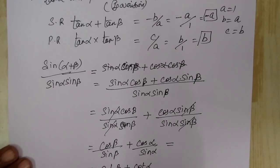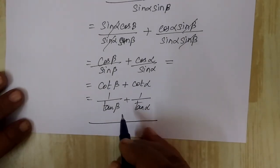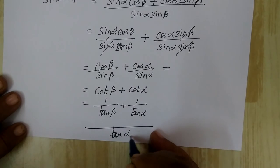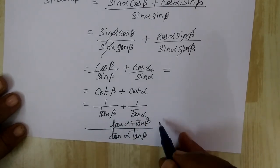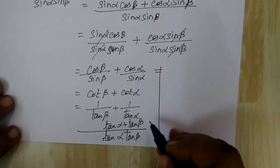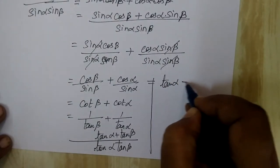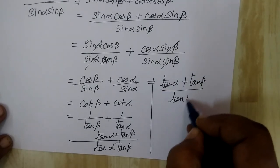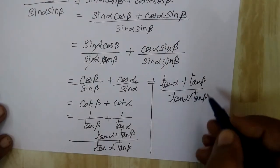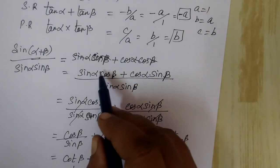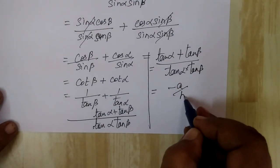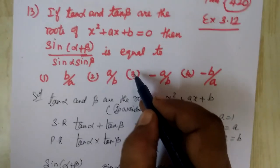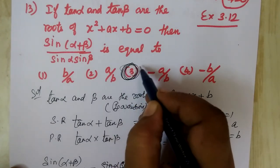This becomes 1 by tan beta plus 1 by tan alpha. Taking LCM as tan alpha tan beta: tan alpha plus tan beta divided by tan alpha into tan beta. So sum of roots divided by product of roots gives minus a divided by b. The correct option is the third one: minus a by b.